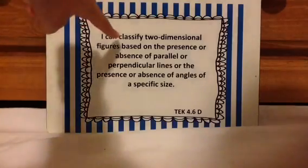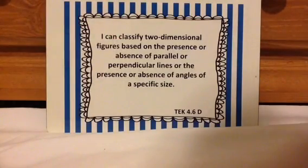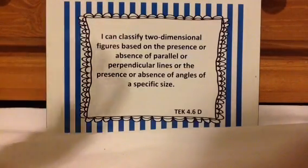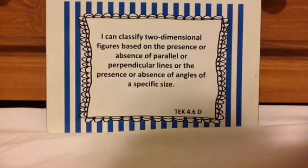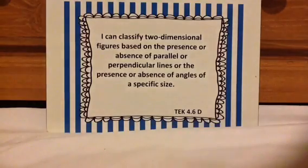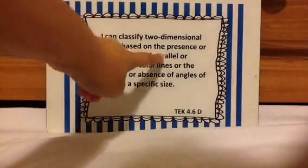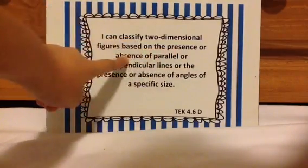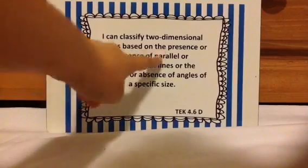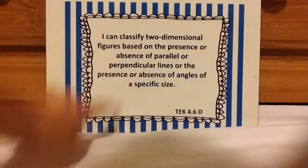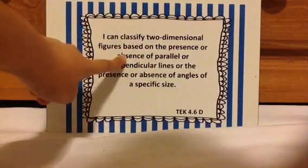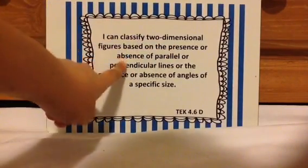It says classify. Classify means you can look at a shape and decide which category it goes in — whether it's a square, a rectangle, a parallelogram, a trapezoid, or a rhombus — based on if it has or doesn't have parallel or perpendicular lines. Presence means it's there; absence means it's not there.